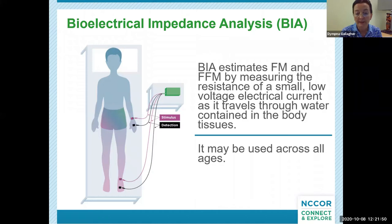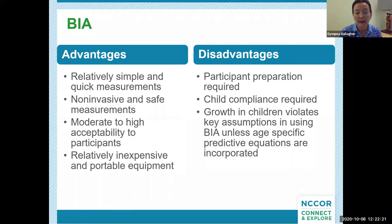Bioelectrical impedance analysis, or BIA, estimates fat mass and fat-free mass by measuring the resistance of a small low-voltage electrical current as it travels through water in the body's tissues. Prediction equations then estimate total fat mass and fat-free mass. It may be used across all ages from birth through adulthood, and there are multiple different BIA instruments available. Advantages include relatively simple and quick measurements, non-invasive and safe, moderate to high acceptability, and relatively inexpensive and portable equipment. Disadvantages include participant preparation required, child compliance required, and growth in children may violate key assumptions in using BIA unless specific predictive equations are incorporated.